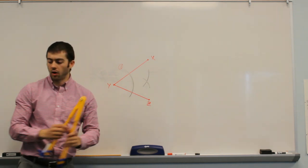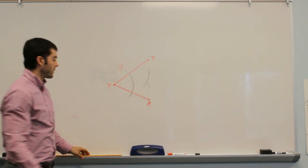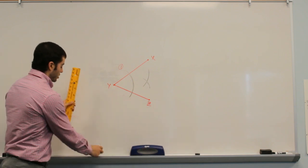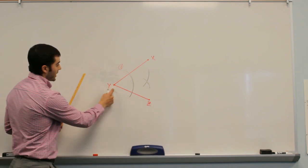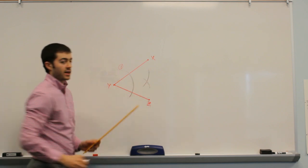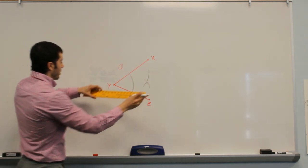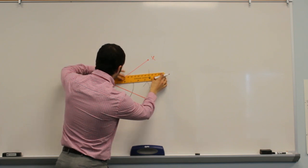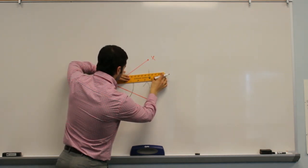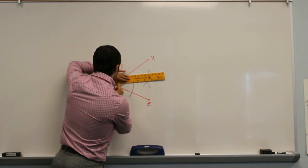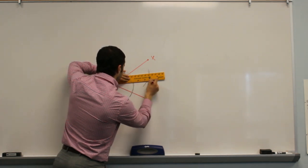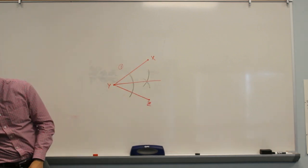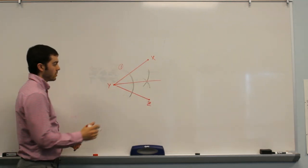So we've made an intersecting set of arcs here, and to finish up our bisection, all we need to do is connect — using a straight edge — connect the vertex of the angle with the intersecting arcs that we've made. We can just use our straight edge here; we want our line to go through the vertex of the angle and the intersecting arcs that we made. So make a line there, and that is the bisector of this angle.